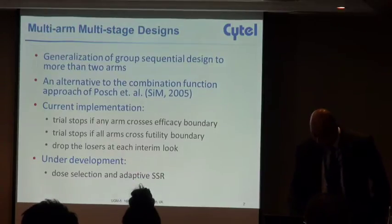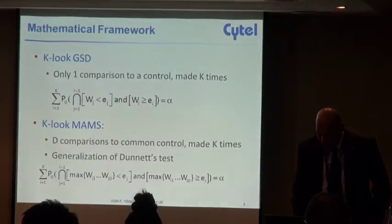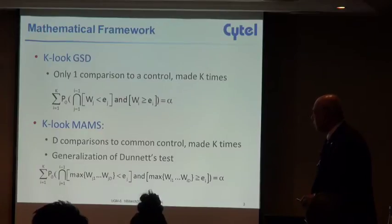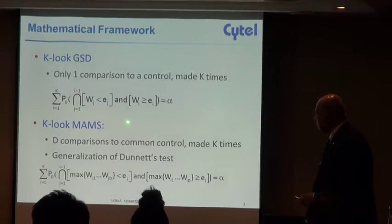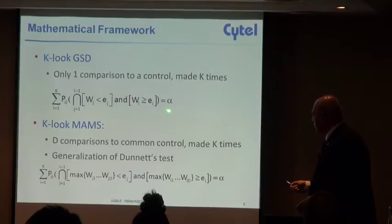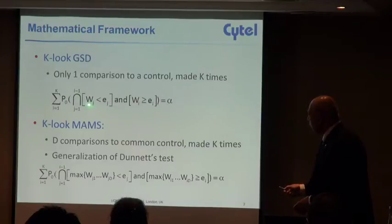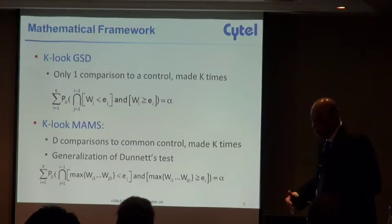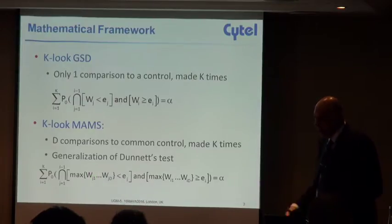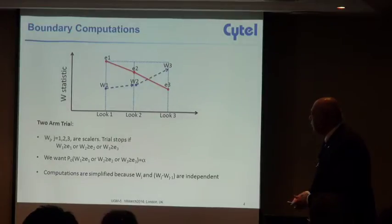The mathematical framework of two arm and K multi-arm and multi-arm with multiple looks is very similar. You can see that the probability equations are very similar except for the fact that here you have only one W, which is a score statistic at each look, whereas in the multi-arm you have D of these W1, W2 through WD. But otherwise, the essential idea is the same.